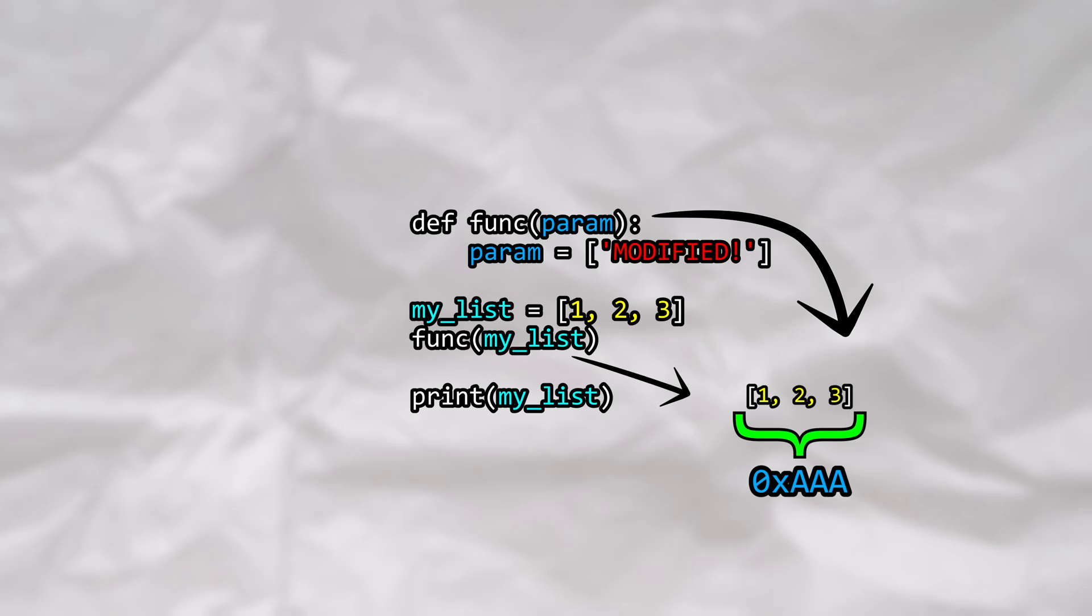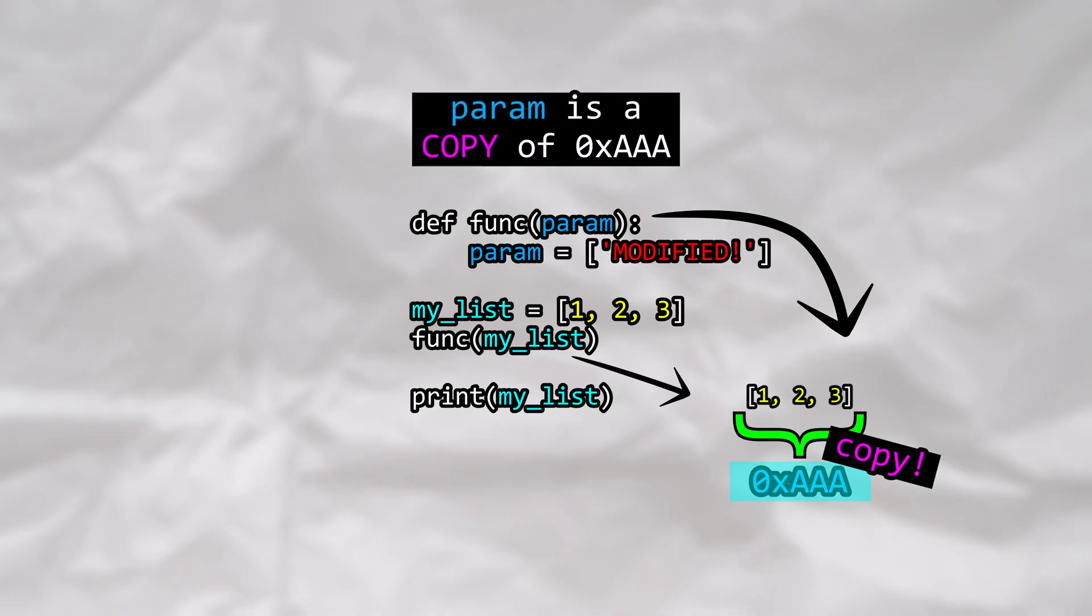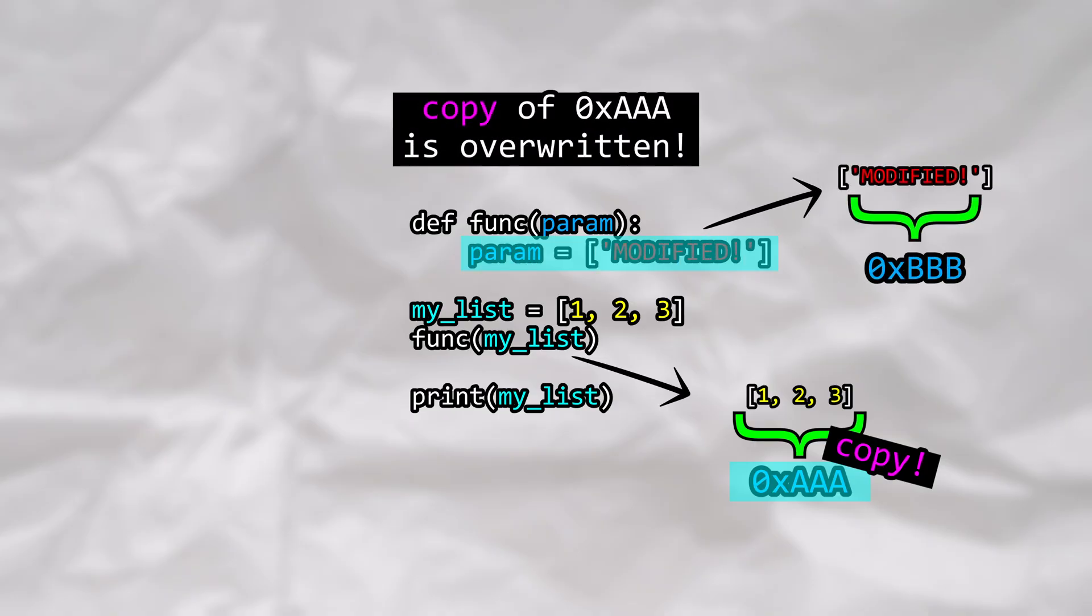let's show that the myList variable points to a memory location. We take this memory location and we create a copy of it, and we hand this copy to the function. In this case, since we're overwriting the parameter within the function, we're actually overwriting a copy of the reference, meaning that the original reference is left intact.